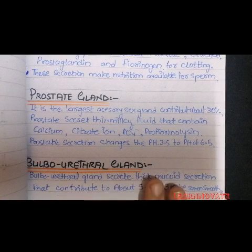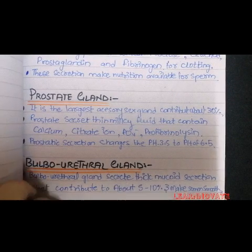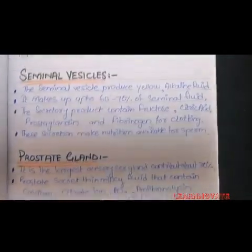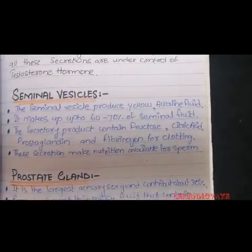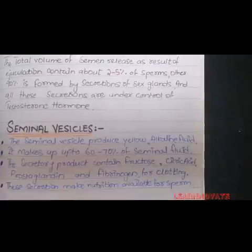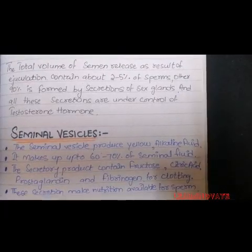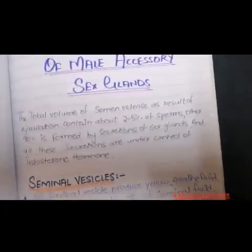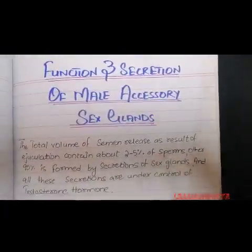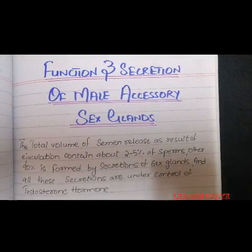So this was all about all three glands. We have discussed the seminal vesicles, the prostate, and the bulbourethral gland, which together make up about 90-95% of the semen secretion. I hope this was explained well. Thank you for watching — please subscribe, like, share, and comment below.